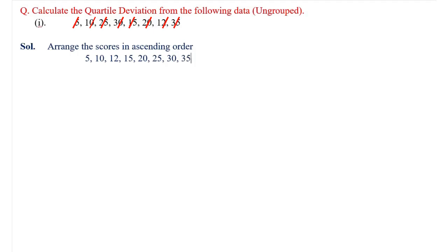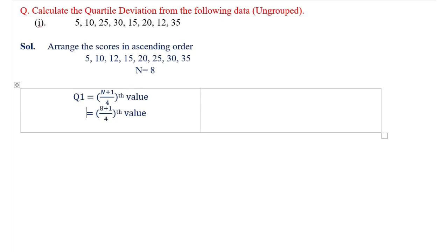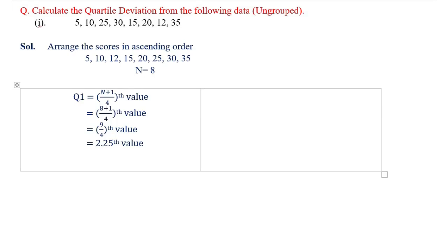Now we will write the total number of scores: N is equal to 8. Next step is to calculate Q1. Q1 is equal to the (N+1)/4th value, that is equal to (8+1)/4th value, which is the 9/4th value. Dividing 9 by 4, that is equal to 2.25.